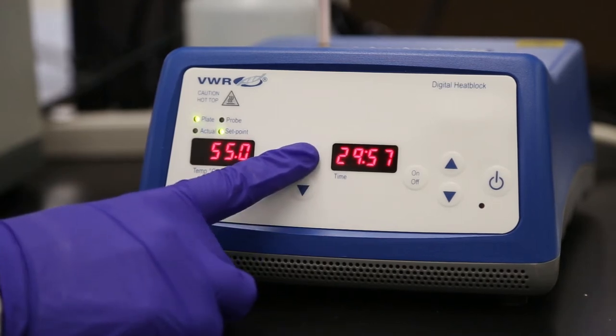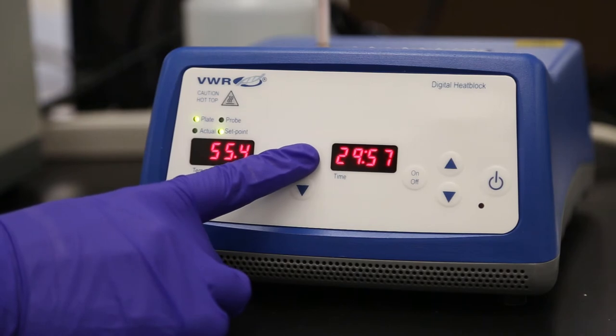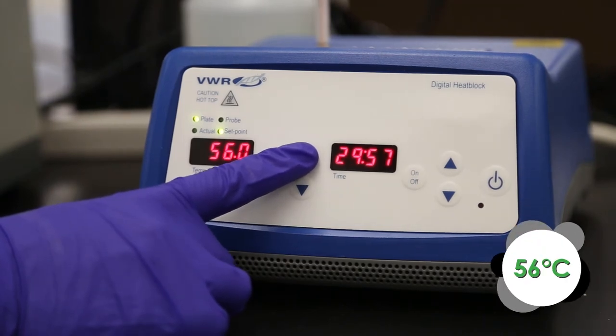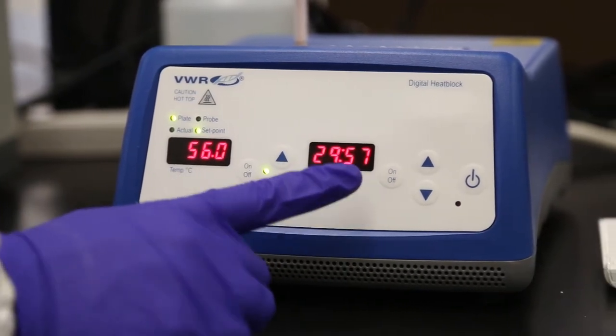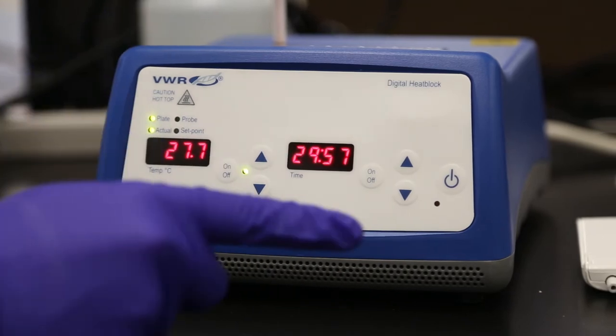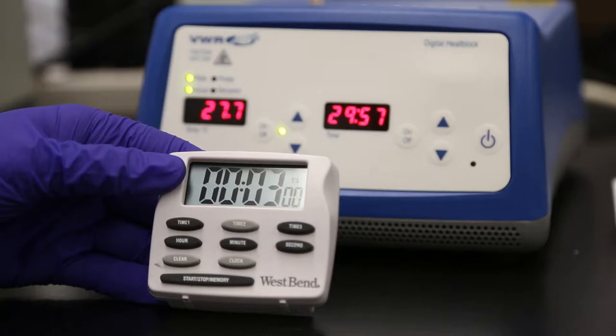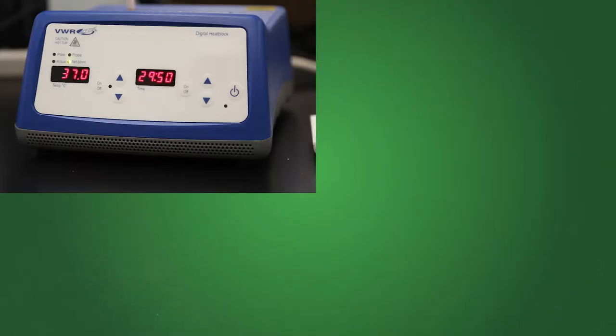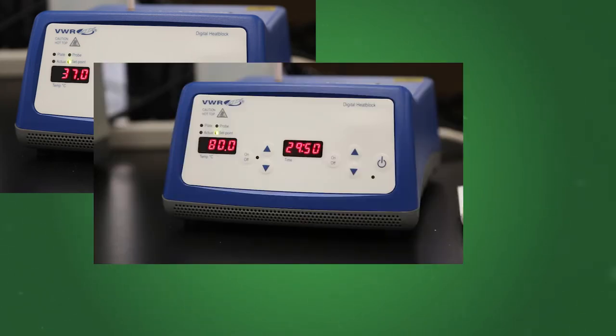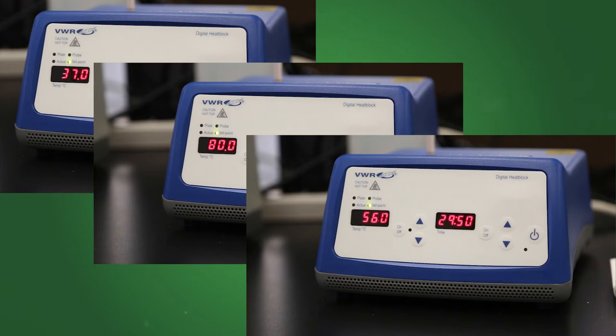To set the temperature, use the up and down arrows to adjust the display to 56 degrees Celsius. Do not use the VWR's timer when running this kit. Instead, use a timer similar to this one, set to 3 minutes. If you are using three single blocks, set the first to 37 degrees Celsius, the second to 80 degrees Celsius, and the last to 56 degrees Celsius. Remember, the green light must be on for the block to heat.